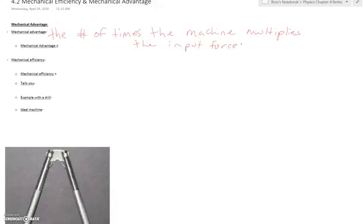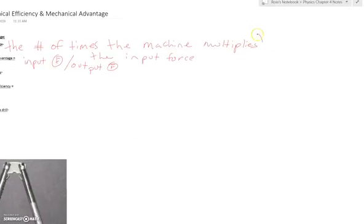You calculate mechanical advantage by taking output divided by input force. Essentially, this is telling you how much bigger of a force you're going to get out of the tool than you put into it. A force is basically how easy it is to do the job, to do the work. If the machine is having a greater output force than the input force, it's applying the force more than you are, and therefore it's making it easier for you.